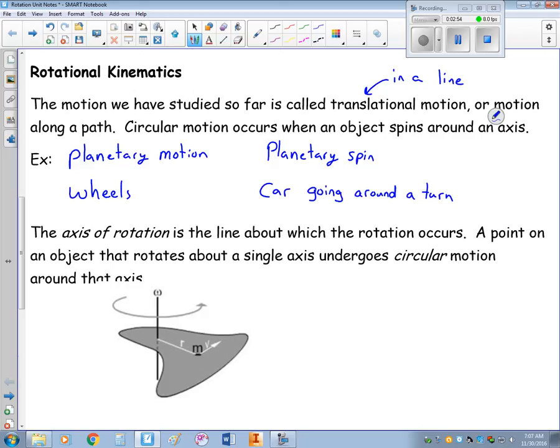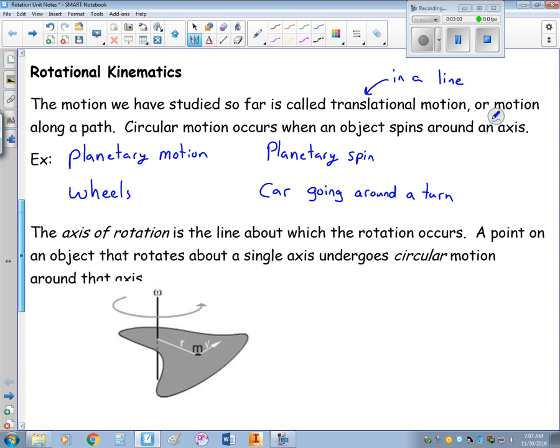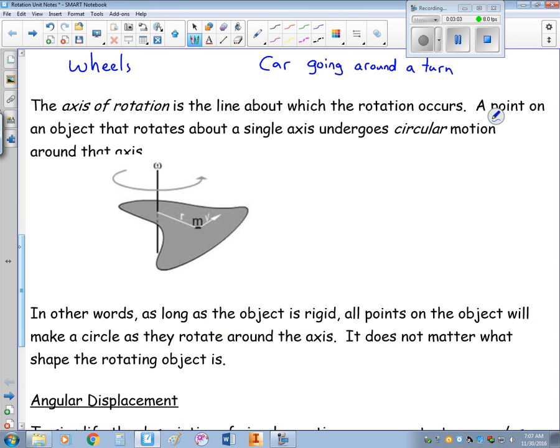We've got a particle, or an object, that is going around some central location. Another bit of definition we need to talk about is the axis of rotation, not to be confused with axis of evil. This is the line about which the rotation occurs.